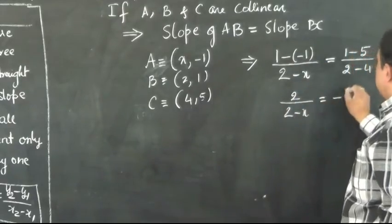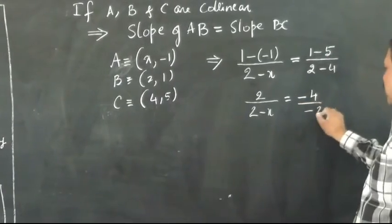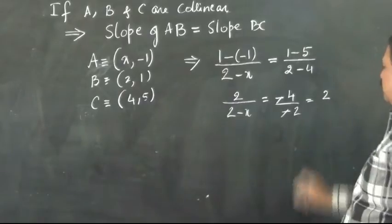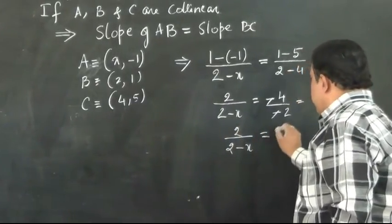1 minus (-1), that is 1 plus 1, that is 2 over 2 minus x equals -4. 1 minus 5 is -4 over -2. You can cancel this -2, this is 2, or 2 over 2 minus x equals 2.